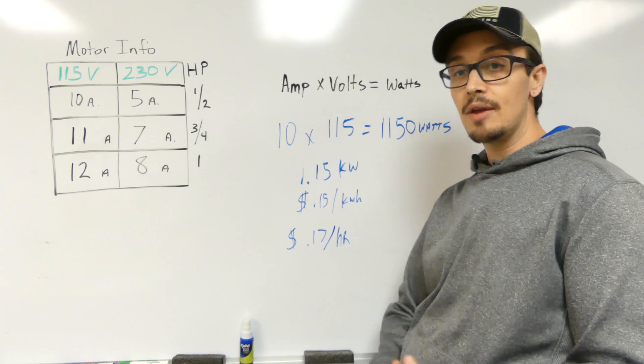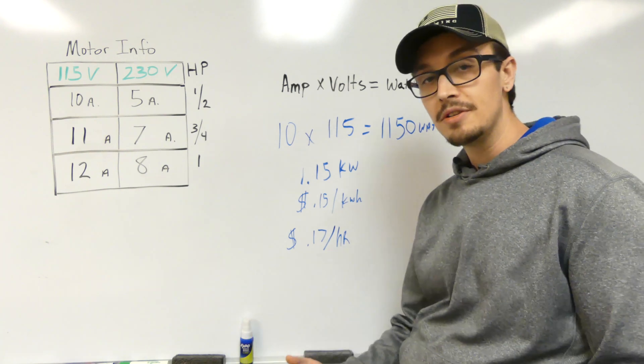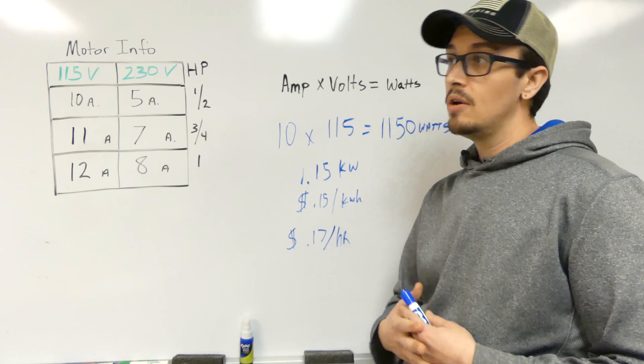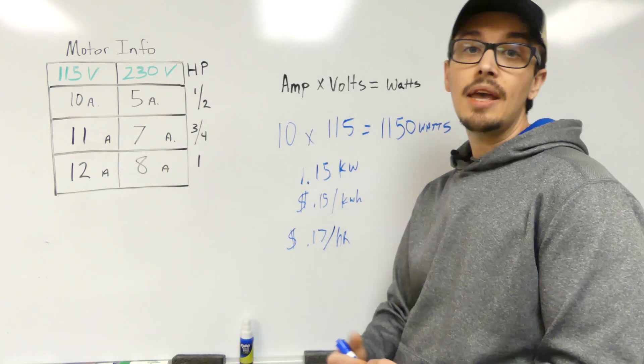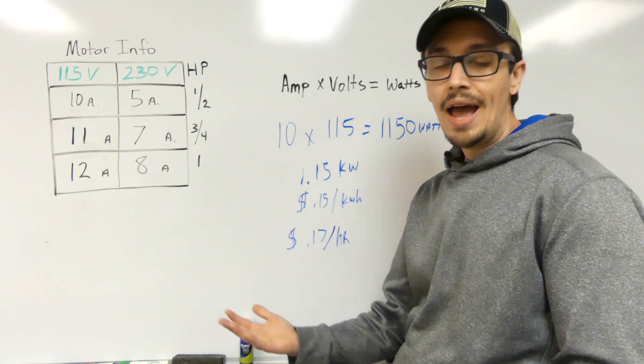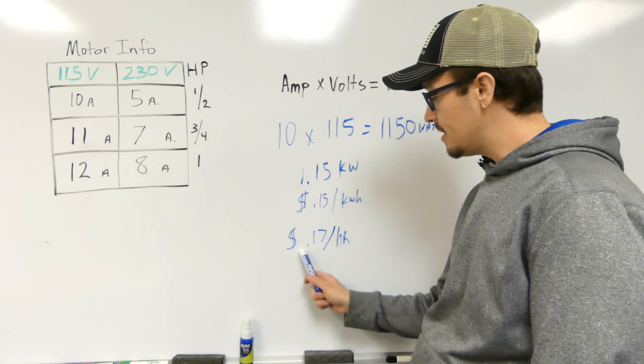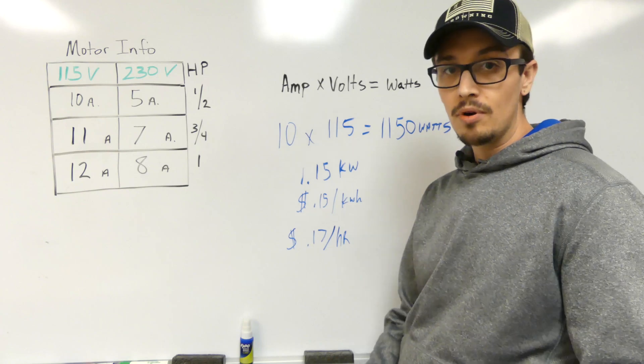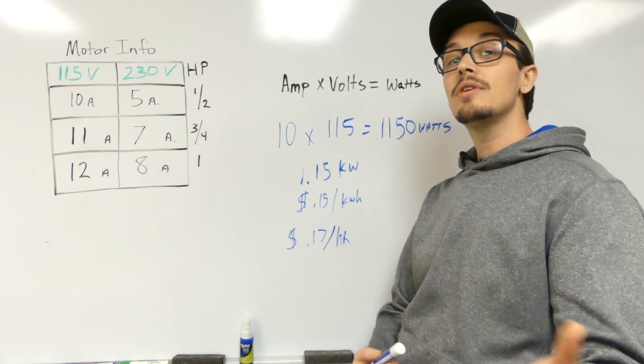So that's just a shorthand way to get a rough estimate on what your energy consumption is. Now obviously you're going to want to factor in how many cycles per day or what the average run time is that you experience, and then you can multiply this by that total runtime and get a more realistic figure based on your consumption.